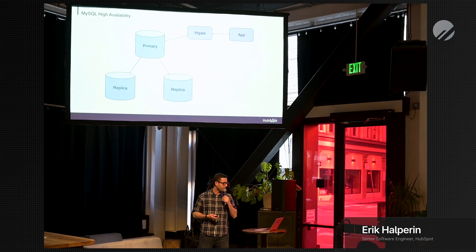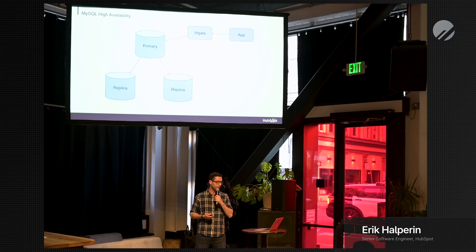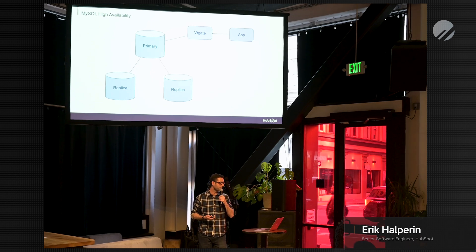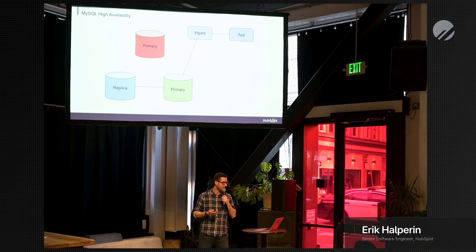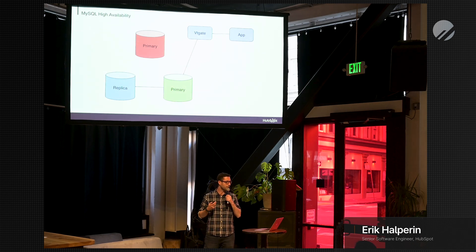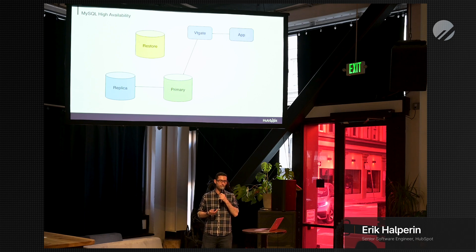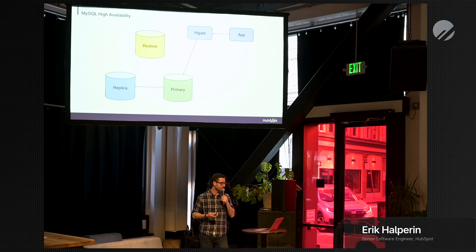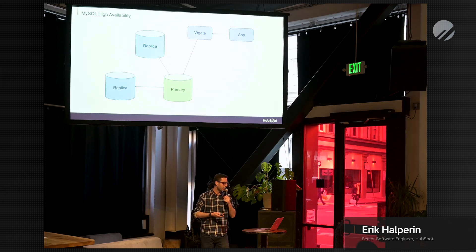A quick overview of Vitess: we have an app that talks to a VTGate that sends queries to the primaries. For us, both read and write queries go to primaries. When something fails, a new primary is promoted, VTGate routes queries to that new primary, the other replica is hooked up to that primary, and then we do a restore of the old primary. At HubSpot we use a primary and two replicas for all our databases, sometimes three replicas. A third replica will finish restoring from an older backup to the new primary, and we're back to our original state.